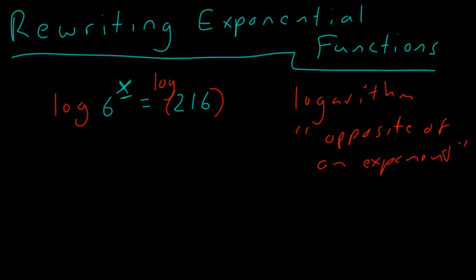Remember, in algebra, we need an opposite for everything so we can get rid of it. So what happens when we take the log of the left side? Well, there's a very interesting property that says whenever you have the log of anything, you can take that exponent and bring it down in front. So we're going to write x log of 6 is equal to the log of 216.